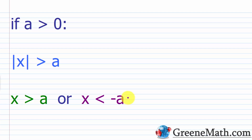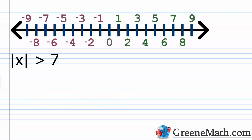We should know that if A is greater than zero — so A represents some positive real number — if we have the absolute value of x is greater than A, this gives us a compound inequality with or. So x can be greater than A, or x can be less than negative A. As a quick example, if we have the absolute value of x is greater than 7, this sets up as x is greater than 7, or x is less than negative 7.